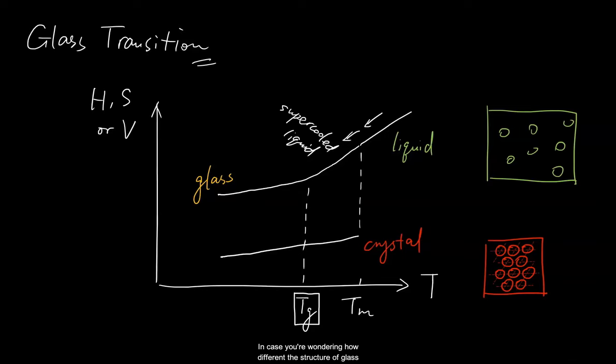In case you're wondering how different the structure of glass is from crystal, here's how it roughly looks like. The molecules in a glass are more disordered and slightly less tightly packed than crystal. That means the density is a little lower in glass than crystal. I'm going to guess that you are also thinking, wait, what if we cool the supercooled liquid at a slower rate? Would the molecules maintain their inertia such that they fall out of equilibrium at a lower temperature?